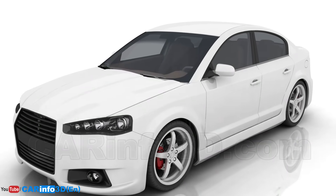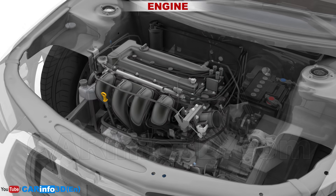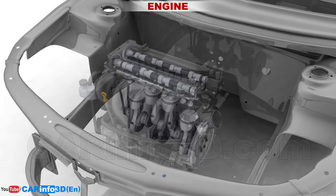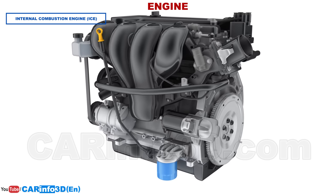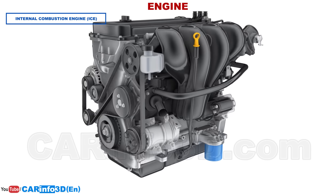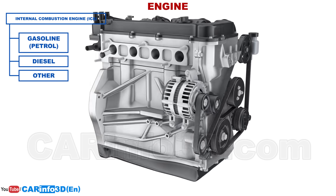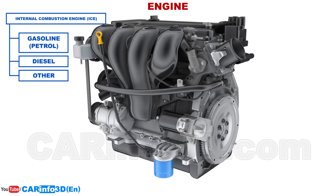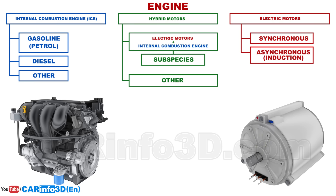The next vehicle system is the engine, usually located in the front of the vehicle. The engine converts one form of energy into mechanical energy, which is then used to propel the car. The internal combustion engine (ICE) is the most commonly used engine type in automobiles. Such engines rely on the combustion energy of gasoline, diesel fuel, or, in rare cases, another kind of fuel. Electric and hybrid motors are also becoming increasingly popular.